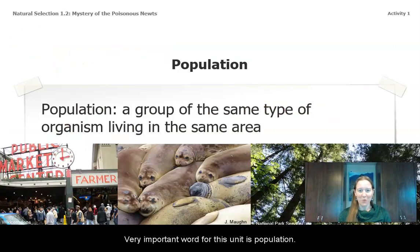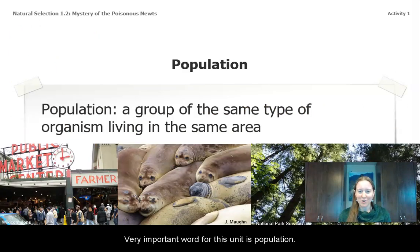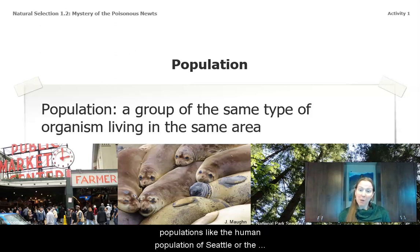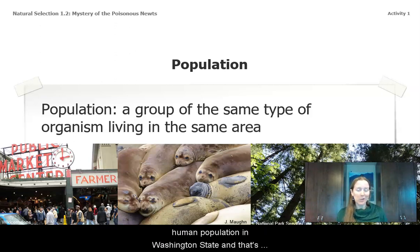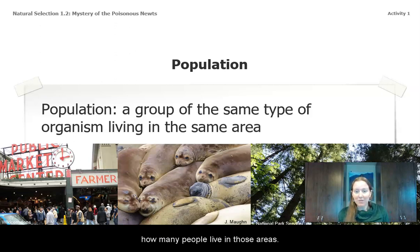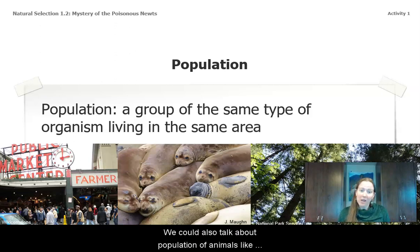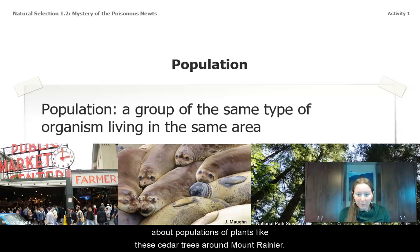A very important word for this unit is population. A population is a group of the same type of organism living in the same area. We can talk about populations like the human population of Seattle or Washington state, populations of animals like seals in the Pacific Ocean, or populations of plants like cedar trees around Mount Rainier.